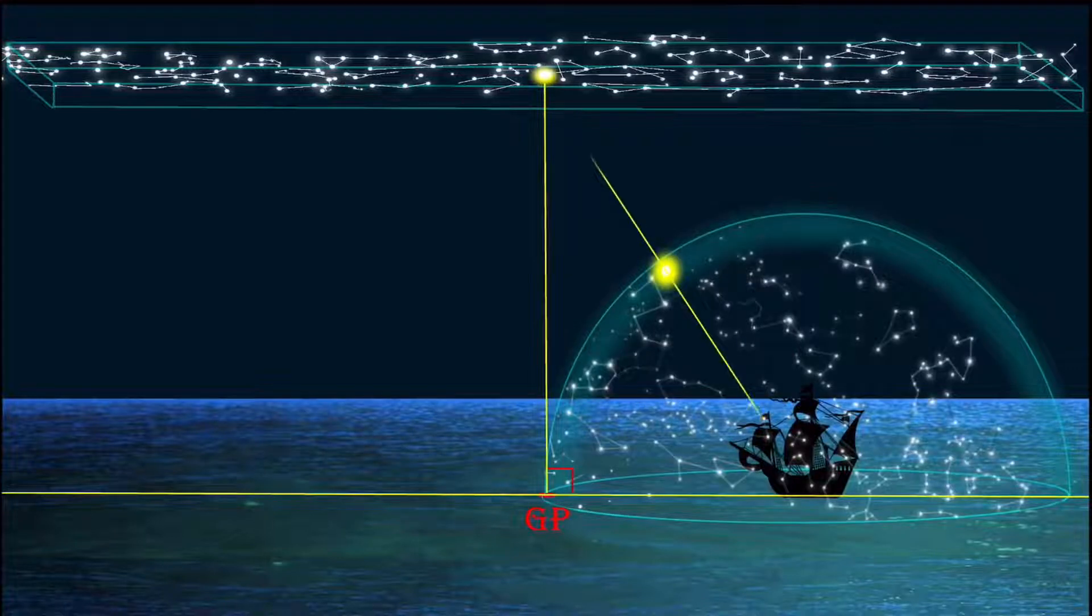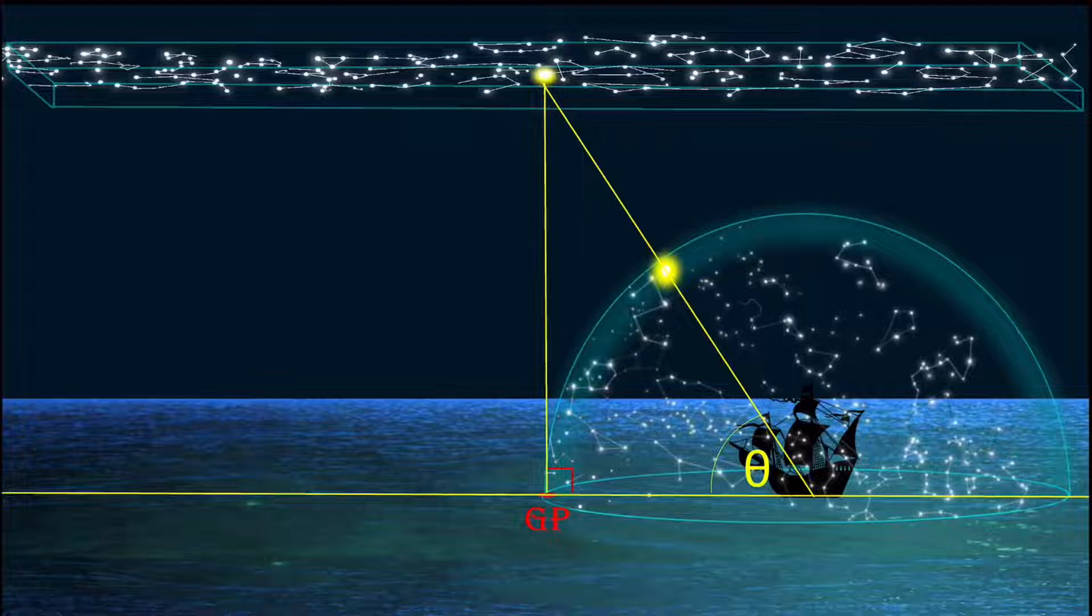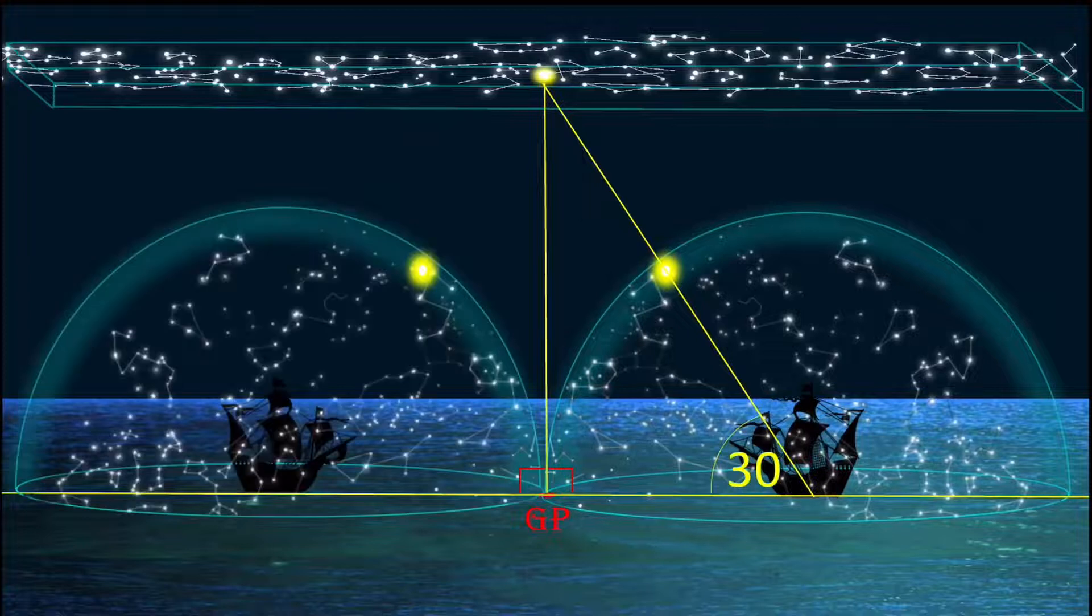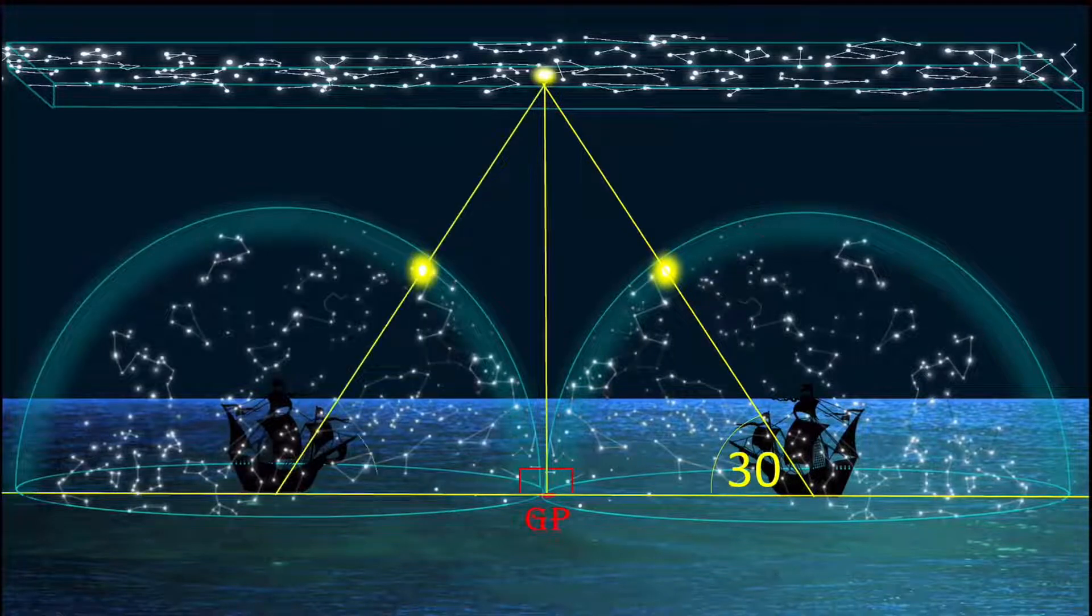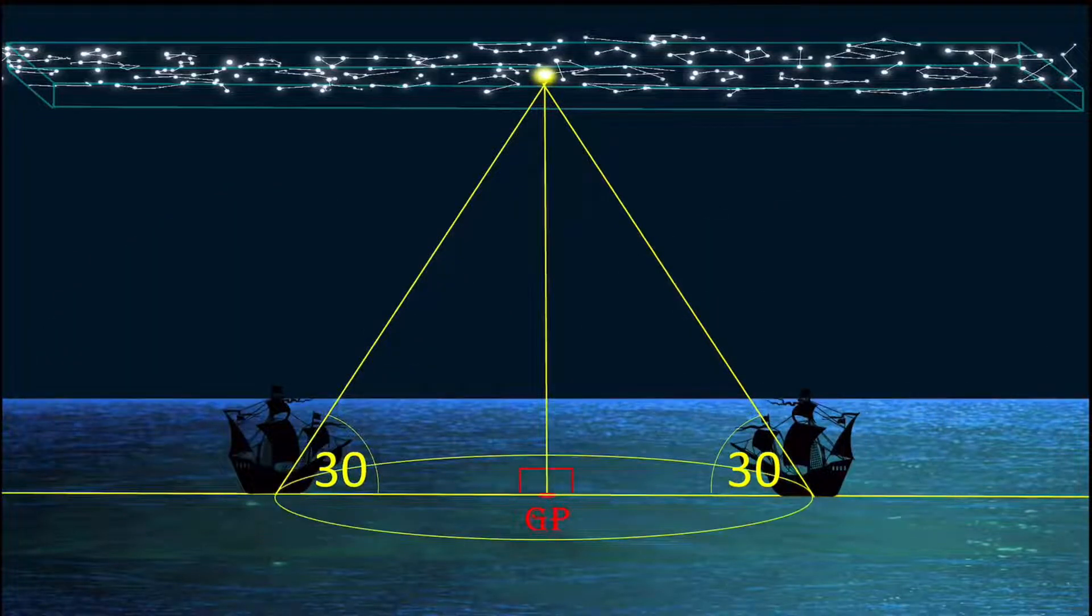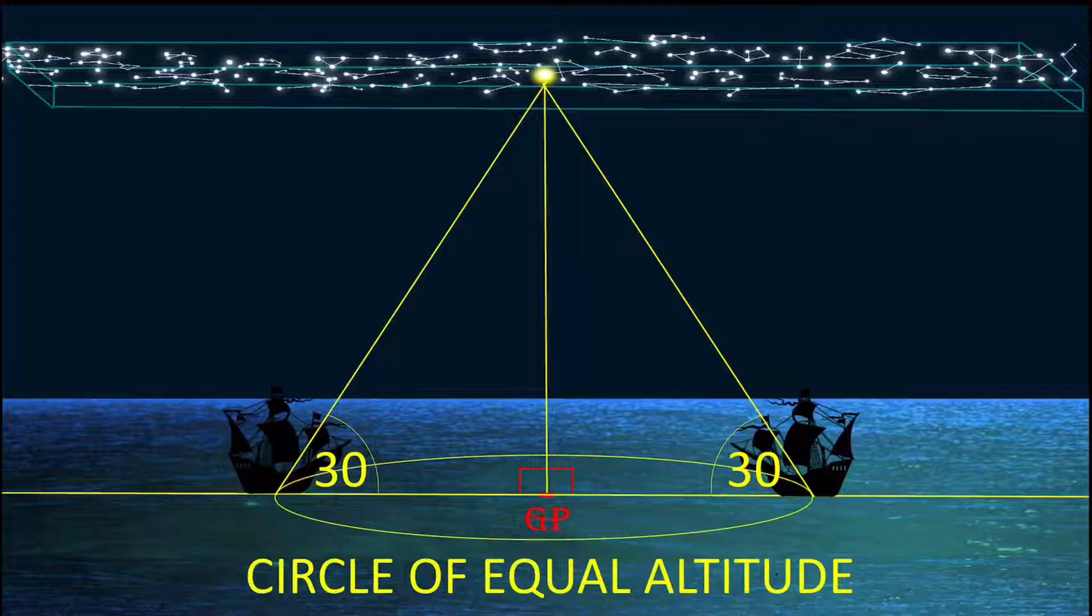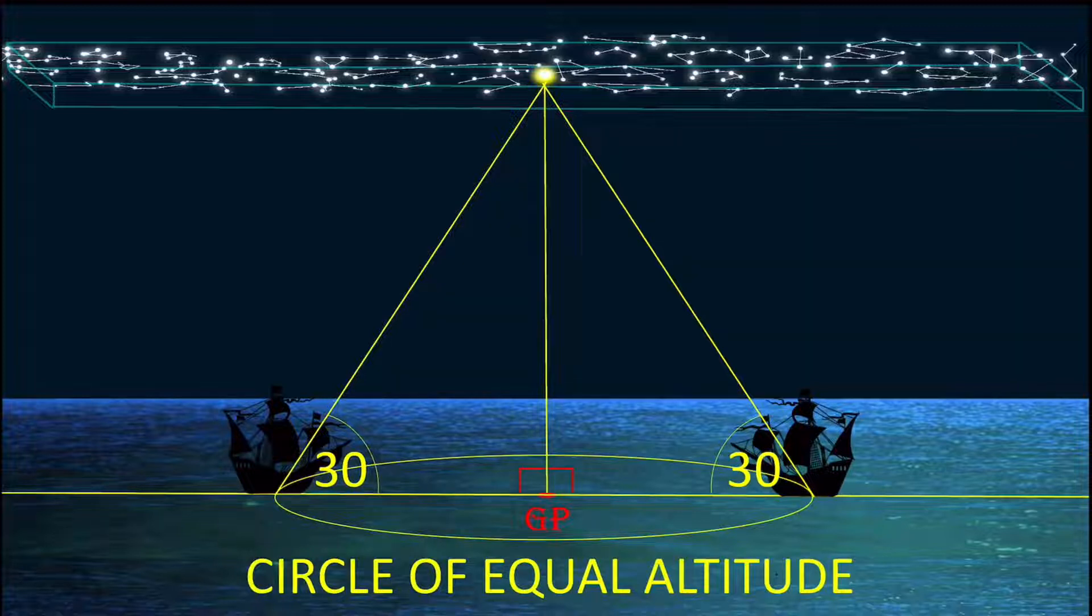Celestial navigation works by using a sextant to measure the angle of that known star and using its relative GP, geographical position, to know where you are. And I'll continue to point out that measuring angles to celestial bodies only works if we are on a flat plane. Now if one observer measures 30 degrees to a star and another observer measures 30 degrees to that same star, we can conclude that they are both on what's called a circle of equal altitude. And this is another killer blow to the globe right here.